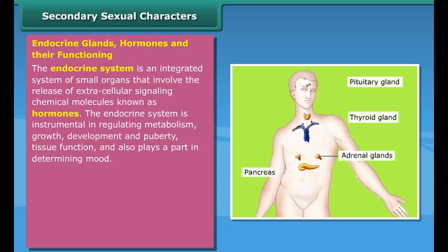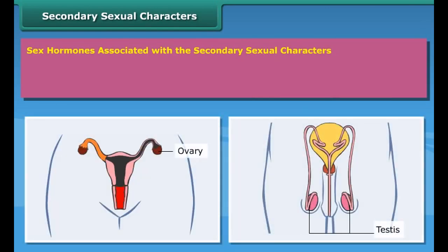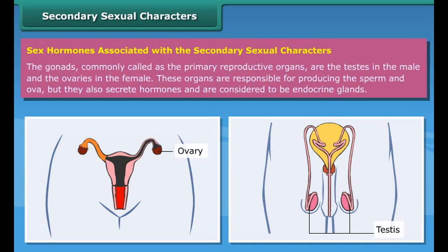Testosterone is involved in greater bone density, larger organ size, higher muscle mass, thicker hair growth, wider shoulders and rib cage, larger voice box and thus deeper voice, and development of male sexual organs. Estrogen is involved in breast development, development of female sexual organs, increase in fat tissue particularly around the thighs, hips, and breasts, reduced muscle mass, wider pelvic bone, growth of the uterine lining, and water retention.